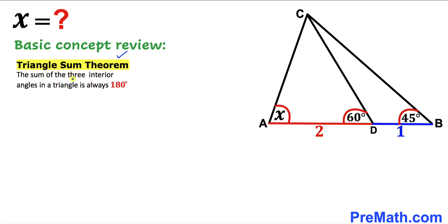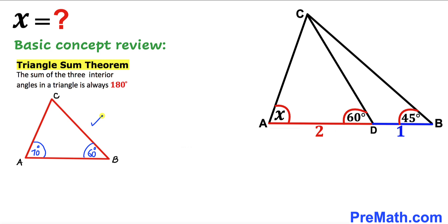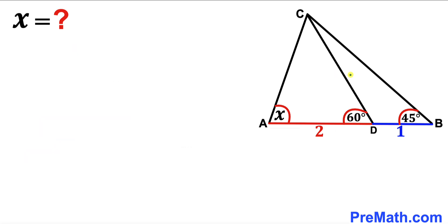Finally, let's recall the triangle sum theorem: the sum of the three interior angles in a triangle is always 180 degrees. For example, in triangle ABC, if one angle is 70 degrees and another is 60 degrees, the third unknown angle must be 50 degrees, since all three must sum to 180 degrees. Now let's return our attention to the given problem.